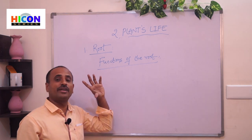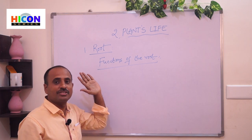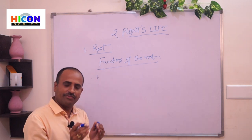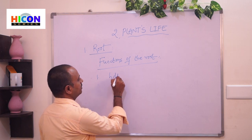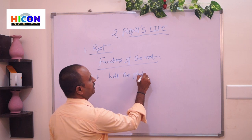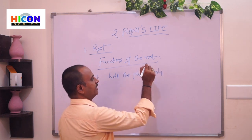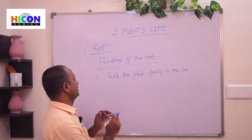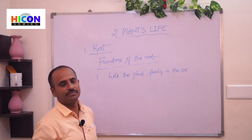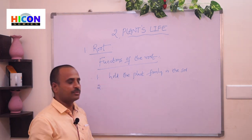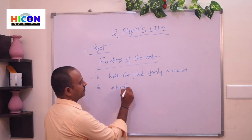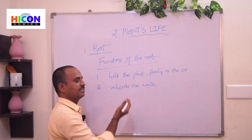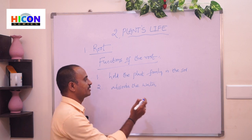Now we are going to learn about the functions of the roots. The first function is that the roots hold the plant firmly in the soil — they give support for the plant without allowing it to fall. The second function is that the roots absorb water and supply it to all parts of the plant through the stem.